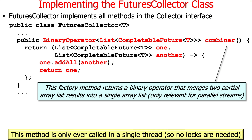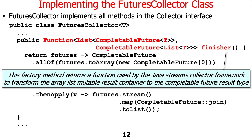The fourth method — and by far the most interesting — is the finisher. This is the method that returns a function that the Java streams framework collector mechanism uses to transform the ArrayList (the mutable result container accumulating the stream elements) into a single CompletableFuture.